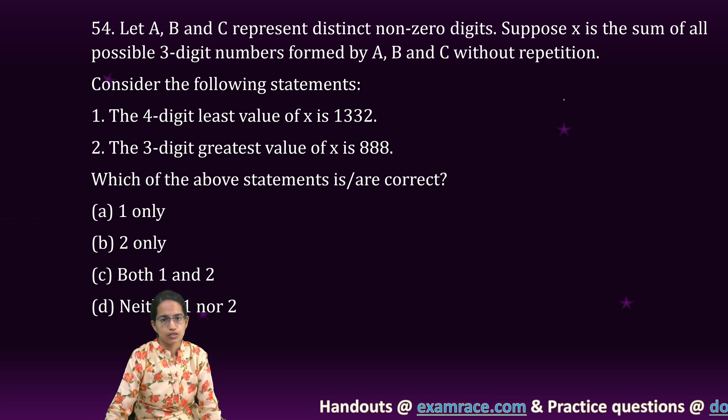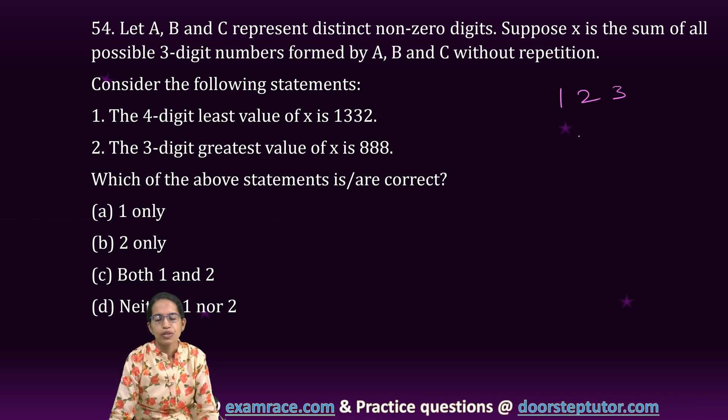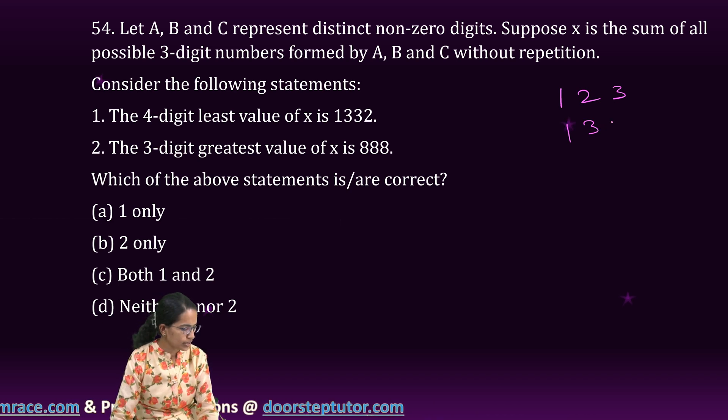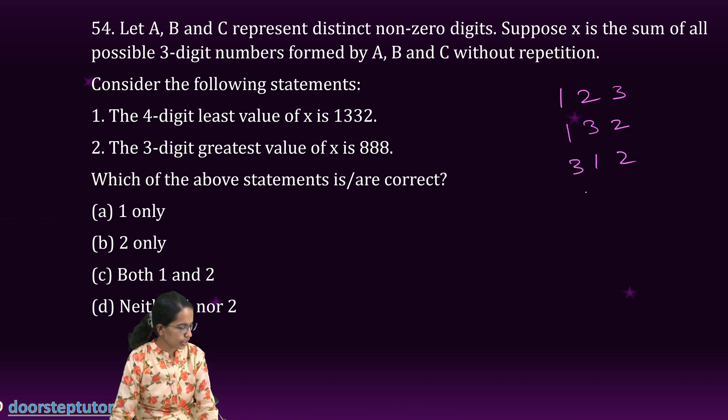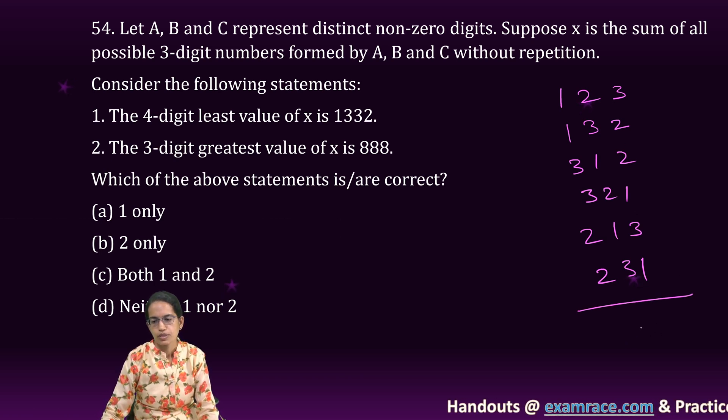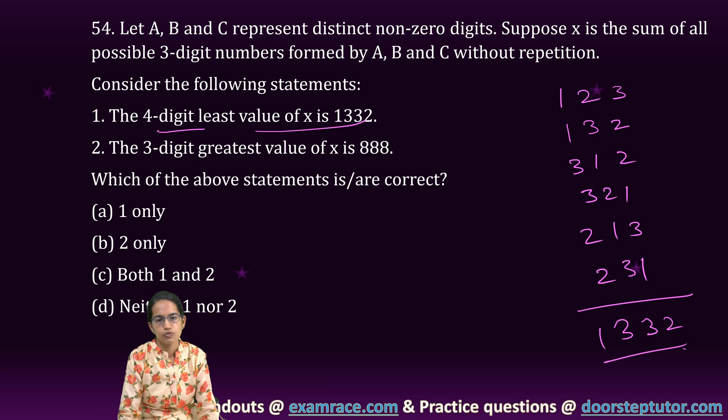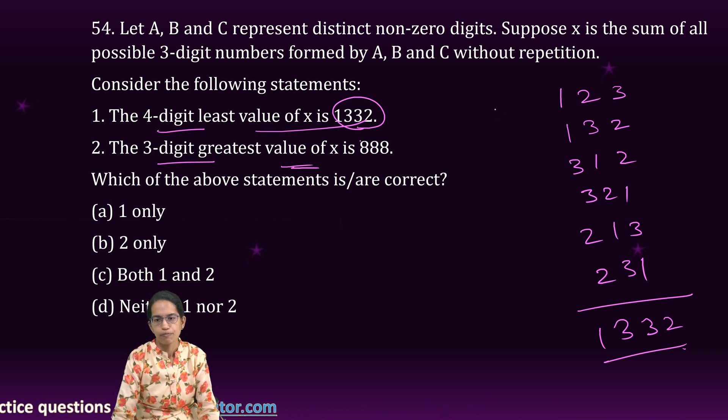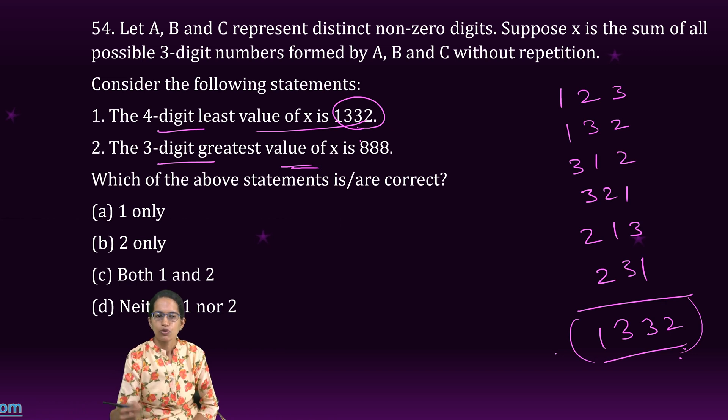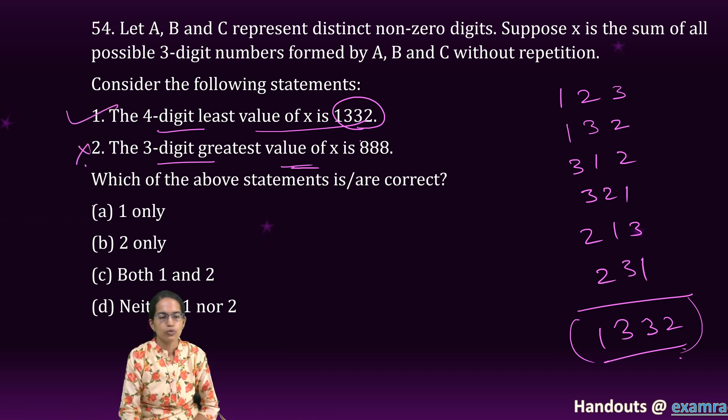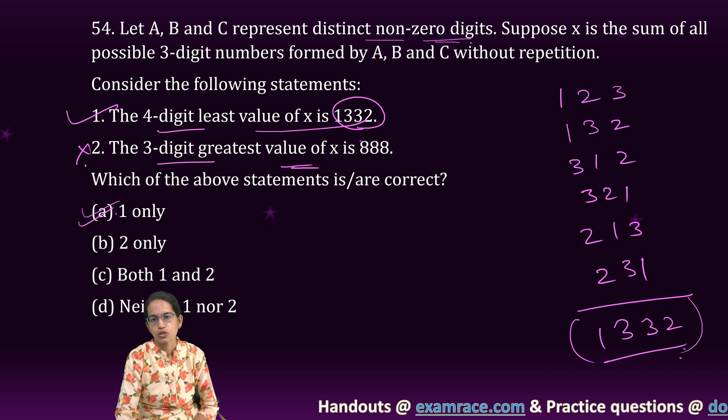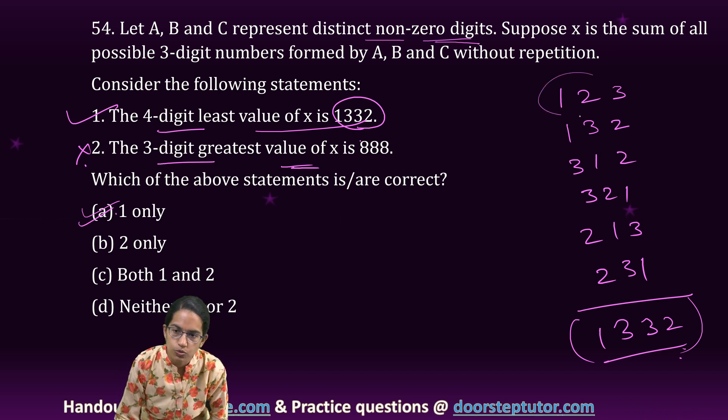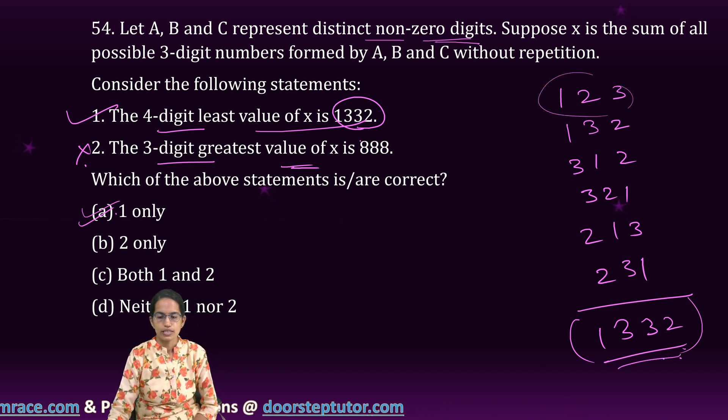Now ABC represents three distinct non-zero numbers. So let the numbers be 1, 2, 3. I can arrange it as 1, 2, 3, 1, 3, 2, 3, 1, then it could be 3, 2, 1, 2, 1, 3 and 2, 3, 1. I add up all these numbers. It gives me 1, 3, 3, 2. So the four digit least value number I can get is 1, 3, 3, 2. Now the three digit greatest value number cannot be obtained because if I take any other number besides this, this value would be greater than this number. So it would be 4 digit only, 3 digit cannot be obtained. So 1 only is the right option and all of those three have to be distinct non-zero digits. So there can be no zero and all three have to be different. So this was the smallest and with the smallest even we are getting 1, 3, 3, 2. So with the greatest we cannot get 8, 8, 8, 8. So that's the simple logic.